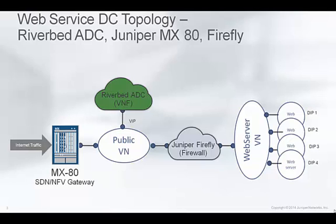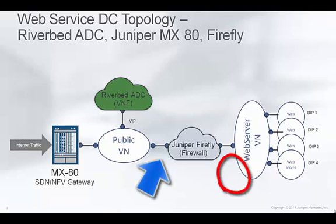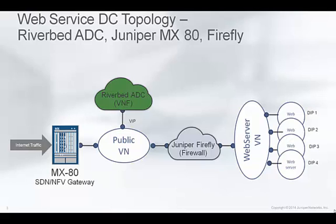This traffic is then routed via the Firefly firewall by virtue of a network policy on the public network. The second network is a virtual network specific for the web servers, and all the web server instances are connected to this network. The Firefly security application is connected to both networks to provide the firewalling function. The web server instances are instantiated in a web server virtual network with private IP blocks 192.168.x.y. Reverse traffic follows the same path back through the web servers, going from the virtual network to the public network, into the ADC, and then NAT'd out of the ADC and back to the internet sources via the MX gateway.